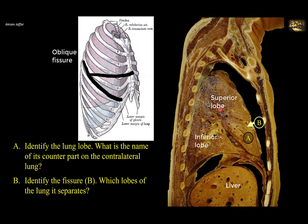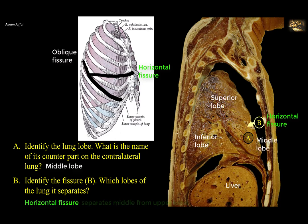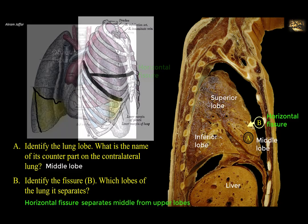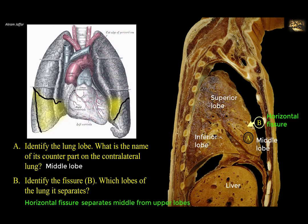B is the horizontal fissure, which passes from the anterior margin of the lung toward the oblique fissure to separate a wedge-shaped lobe of the right lung called the middle lobe — separating it from the upper lobe. There is no middle lobe in the left lung, but there is a tongue-like projection of the upper lobe at the cardiac notch which corresponds to the right middle lobe. This structure, the counterpart of the middle lobe of the right lung, is called the lingula.